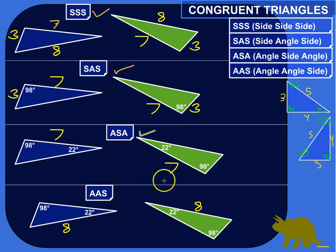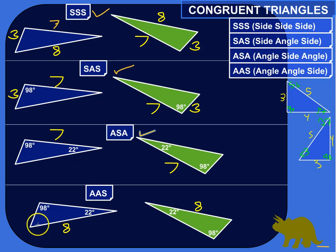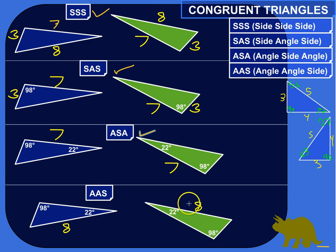And then finally we've got Angle-Angle-Side, which means if I know two angles and a side that's not between them, that's enough information to tell me that the triangles have to be congruent. So I've got a 98 degree angle and a 22 degree angle, and then the side that's not between them has a length of eight. Here I've also got a 22 degree angle and a 98 degree angle, and the side that's not between them is eight. Same measurement — so these two triangles are congruent.